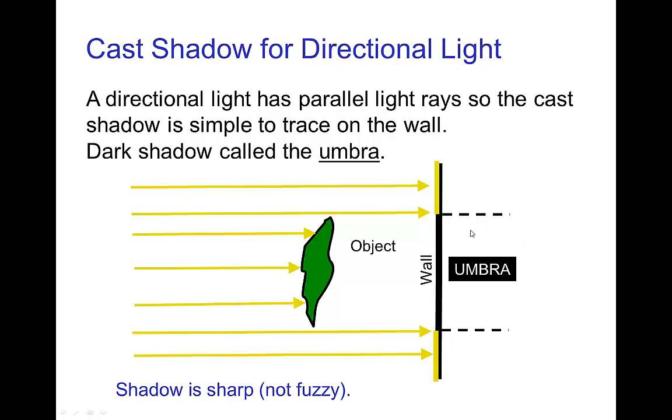The object either blocks a light ray or it doesn't block a light ray, and so the wall is either in shadow in some parts, which is the umbra, or not at all in shadow and is uniformly bright everywhere else. Also the shadow is sharp.